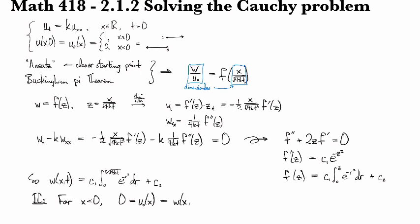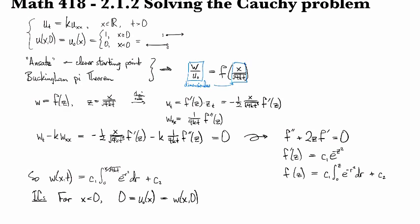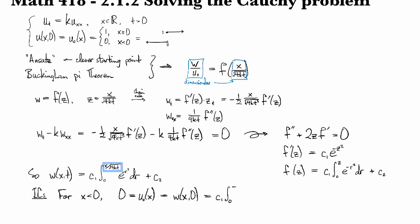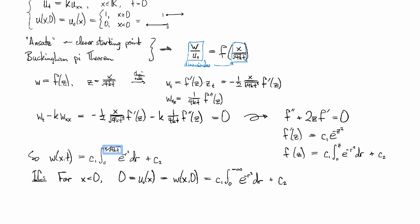Well, so this is going to be C1 times the integral from zero to, and now x is negative, so as t goes to zero the magnitude of this term right here is going to blow up, but the fact that x is negative means that it's going to go to minus infinity, e to the negative r squared dr plus C2.